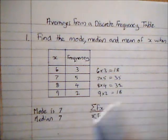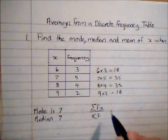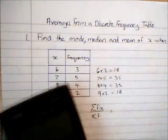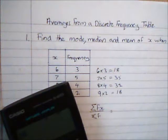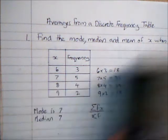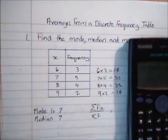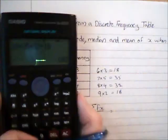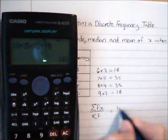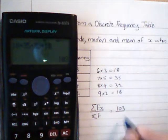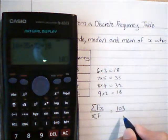So sigma fx, I could easily do without a calculator, but I'm going to use my calculator just to speed up. Remember that the whole of the S1 module allows calculator use, so we might as well make use of that. It's so easy to make little mistakes. So 103 is that total.